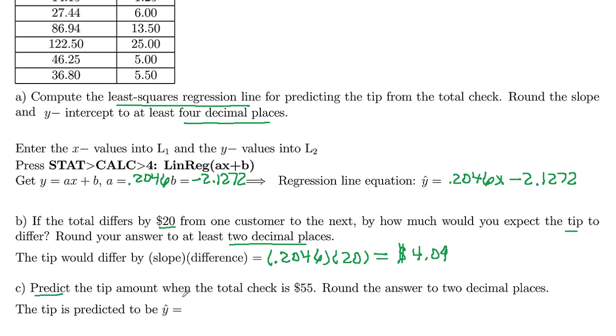Predict here the tip amount when the total check is $55. So the total check, that's an x value. So what they're telling us there is that x equals 55. And then the tip amount here, that's our y-hat. So what we want to do is find the y-hat value that goes with 55. So we're going to plug 55 in here.